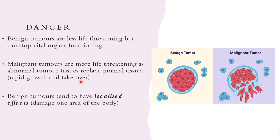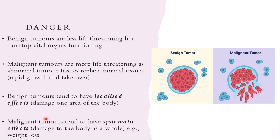Benign tumors tend to have more localized effects — they damage one area of the body, whether a vital organ or a normal piece of skin tissue. Malignant tumors tend to have systemic effects, causing damage to the body as a whole — for example, weight loss. Because malignant tumor cells can spread to different parts of the body, they have an effect on the whole body, whereas benign tumors are more localized.